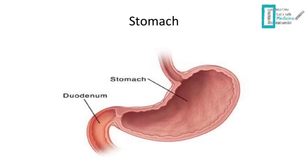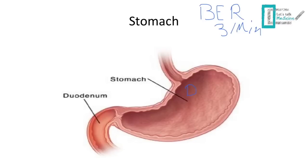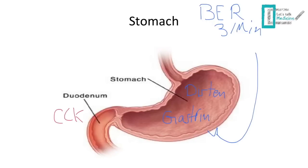Now let's jump into the stomach. The basic electrical rhythm of the stomach is 3 per minute. What stimulates stomach movement includes distension when food enters and distends the muscle wall, gastrin hormone, and the parasympathetic from the vagus nerve. What inhibits stomach movement includes duodenal hormones: CCK and secretin.